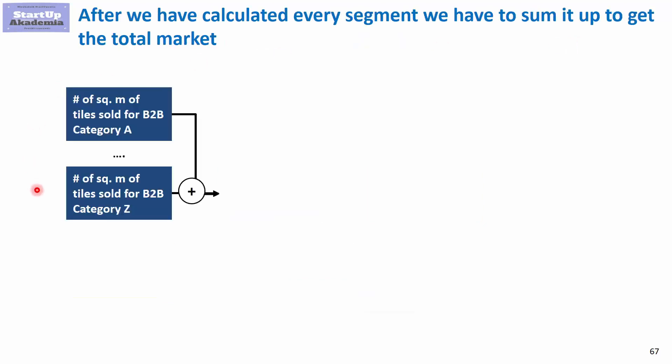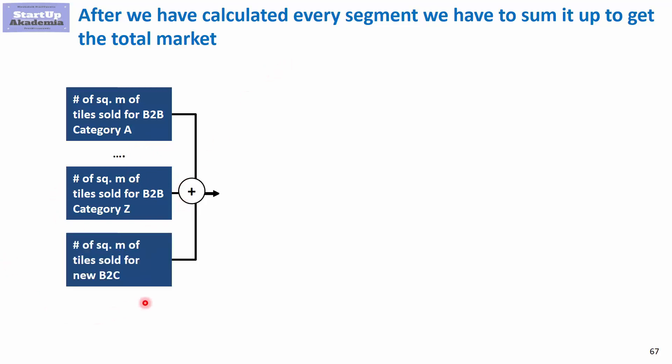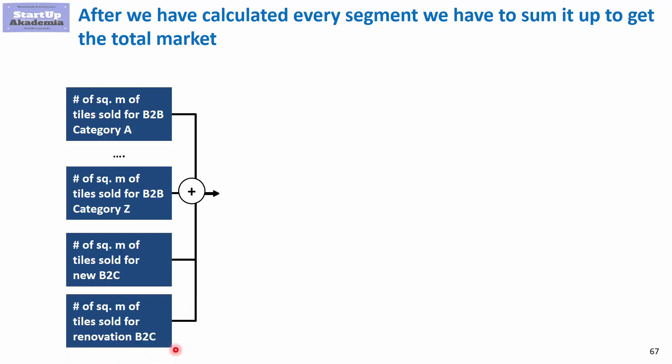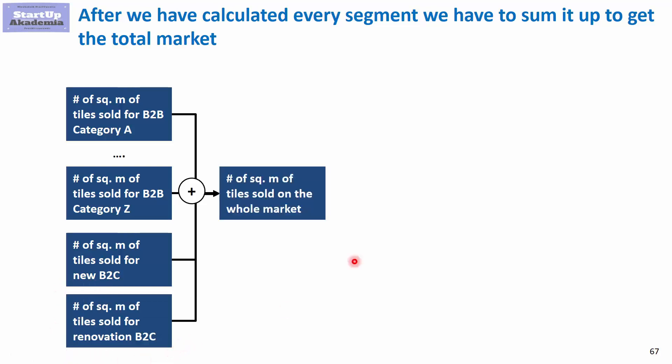At the very end, we add up all segments — B2B categories from A to Z, the B2C new market, and the B2C renovation market — to get the total market size in square meters. If you want the value, add up the values of each segment. Check this solution against yours and see what mistakes you made.